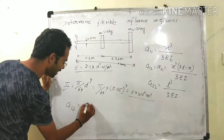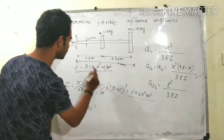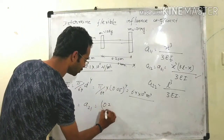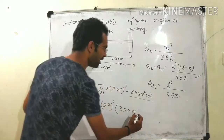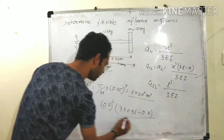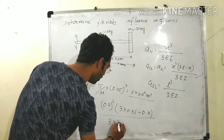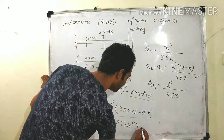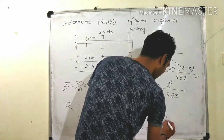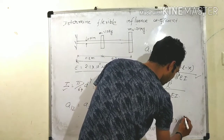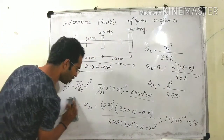For A12 or A21, we use the formula: x² × (3L − x) divided by 6EI, which becomes (0.2)² multiplied by (3 × 0.45 − 0.2) divided by 3EI. Solving this gives the value 1.19 × 10⁻⁷ meter per newton.